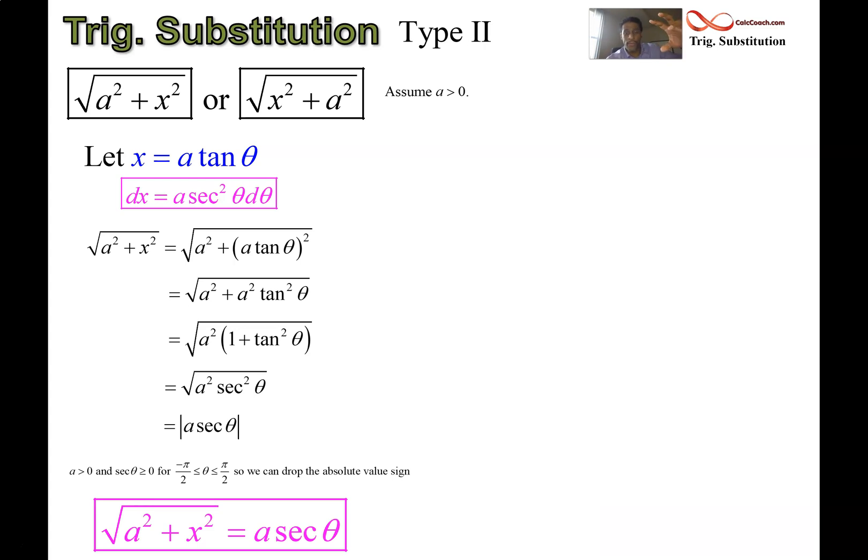The radical that started off this trig sub gets replaced by a sec theta when it's this Type 2, letting x equal a tan theta. So from here, you can just memorize it or, if you want to, you can go through the algebra each time, but I don't really want you to do that.